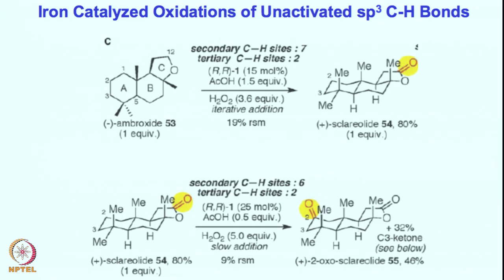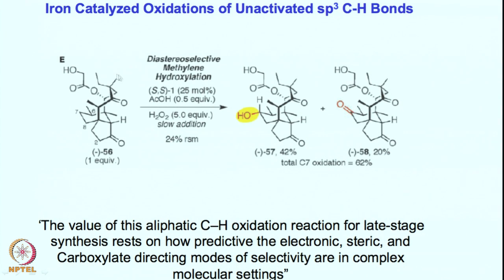Let us see some final examples. As we are increasingly seeing, more complicated substrates become much easier to predict where the reaction is going to be. This is a really beautiful and very complex compound — a natural product analogue. We can see that there are many carbon-hydrogen bonds present; we can leave out the primary ones and focus on the secondary and tertiary ones.